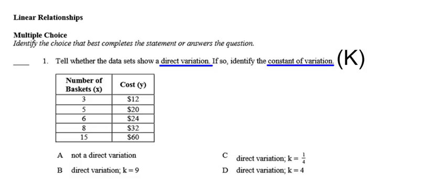Question 1. Tell whether the data set shows a direct variation, and if so, identify the constant of variation — remember the capital K. What is the constant of variation? You can use your anchor charts in the room if that helps.